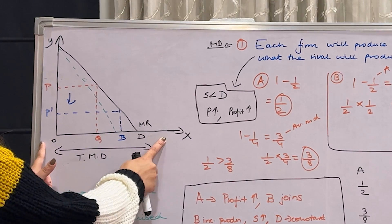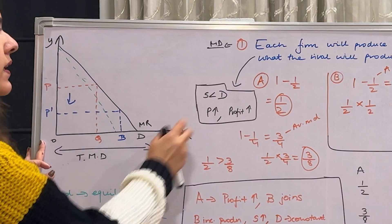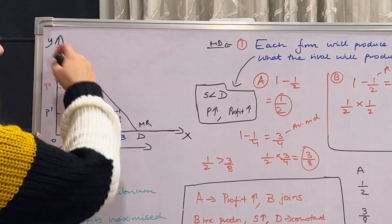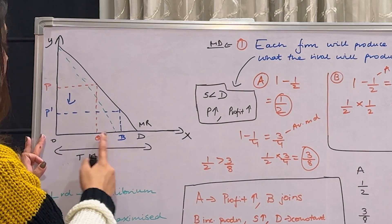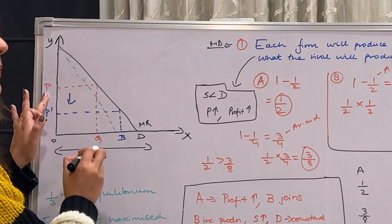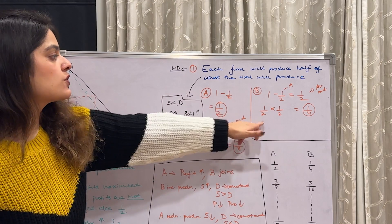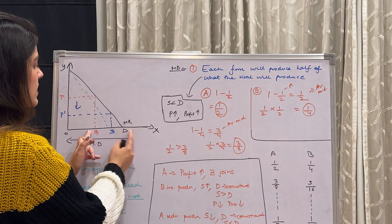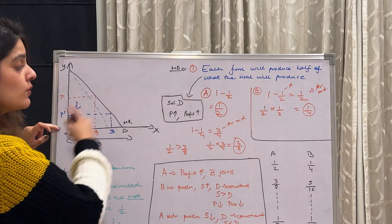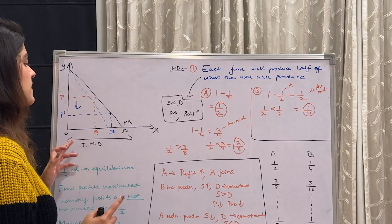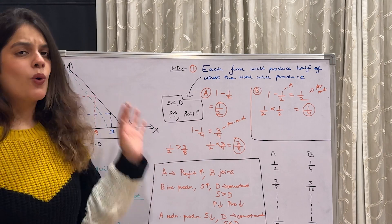Coming to the diagram: the whole market demand is OD on the x-axis, where we're taking quantity, and the y-axis shows price. OD is the total market demand, which equals one. OQ is the half that A produces. These black and green lines are MR and marginal revenue curves, which are negatively sloping. A is producing at OQ quantity at OP price — this red one is A's production. B is going to produce half of A, so B's production covers the segment from Q to the midpoint of QD, and as B enters the market, the price falls. The cycle keeps going, shown step by step in the diagram.